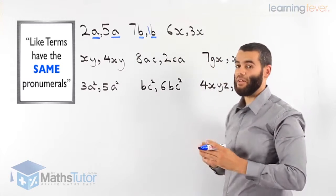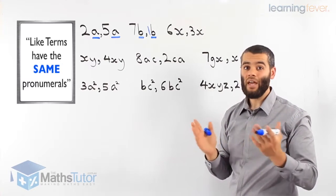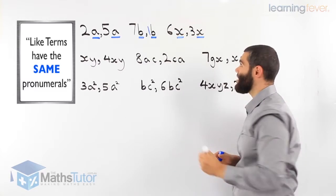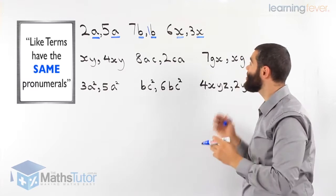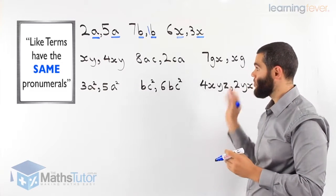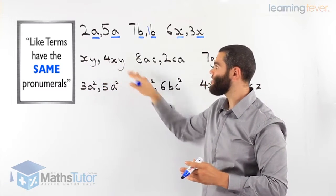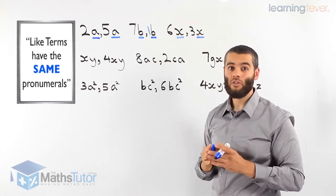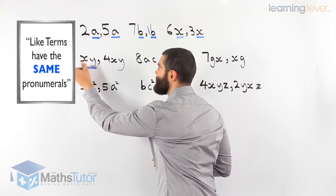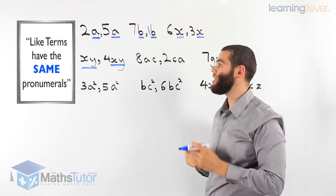Now you answer this one: 6x and 3x. Are they like terms? Do they have the same pronumeral? We have an x here and an x here. Yes, 6x and 3x are like terms, meaning they can be added and subtracted. We also have xy and 4xy. Do they have the same pronumerals? We have xy here and xy here — yes, they are like terms, so we can add them up if we need to.